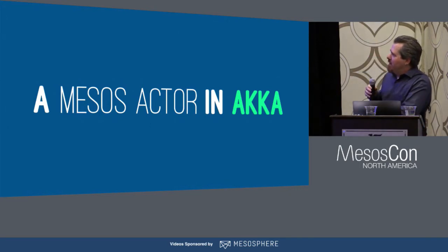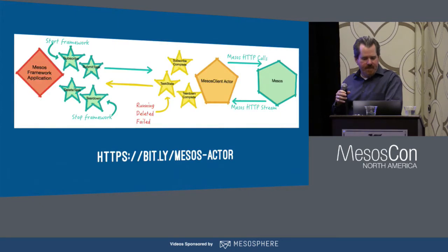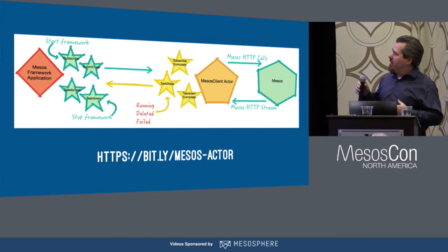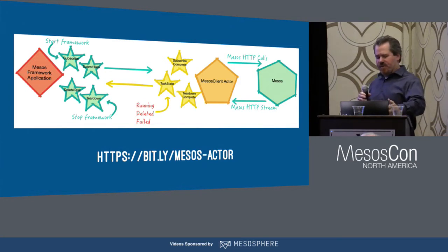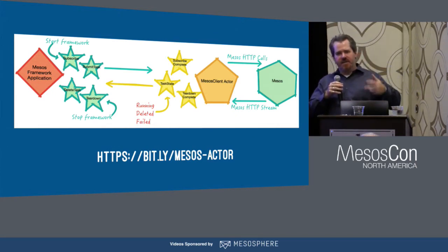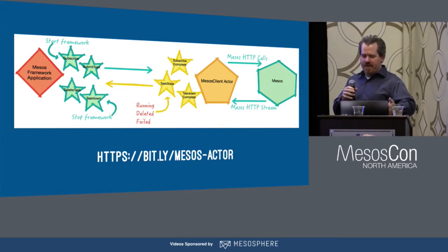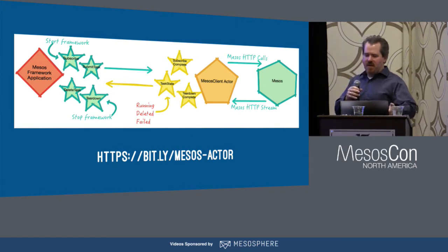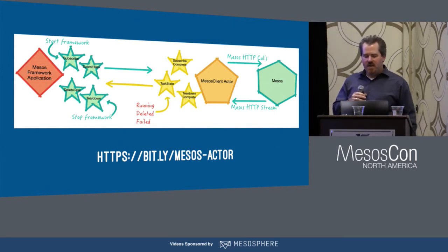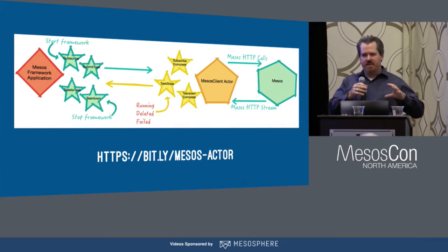The Mesos actor's lifecycle begins with a subscription — you send the actor a subscribe message. Once subscription is complete, you can send a task submission message. You receive task state messages as tasks change state within Mesos. Then you can delete tasks and tear down the framework. Interacting with the Mesos scheduler API really becomes an exercise in Akka messaging at this point.